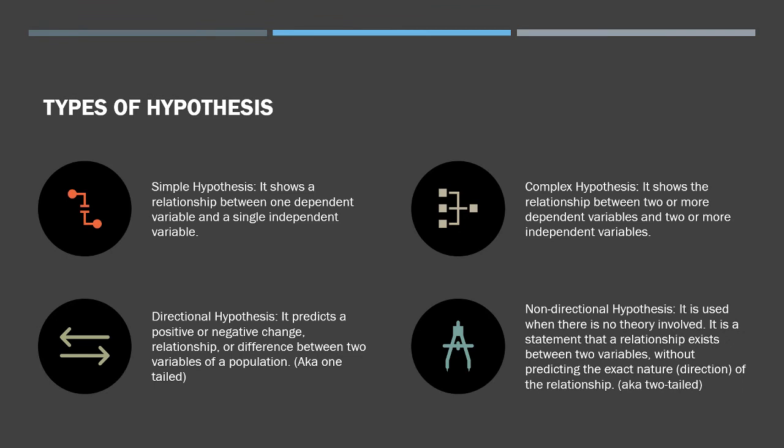The first type of research hypothesis is the simple hypothesis. It shows the relationship between one dependent variable and one single independent variable. For example, sleep deprivation affects your performance. Here, sleep deprivation is the independent variable and performance is the dependent variable. We call this a simple hypothesis.